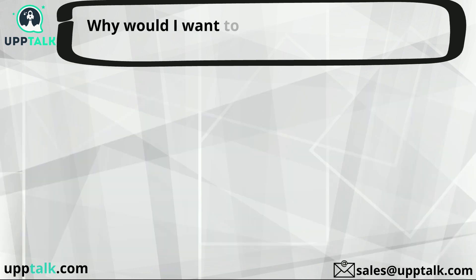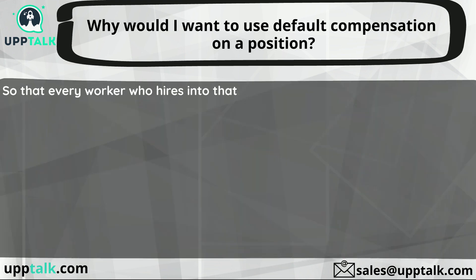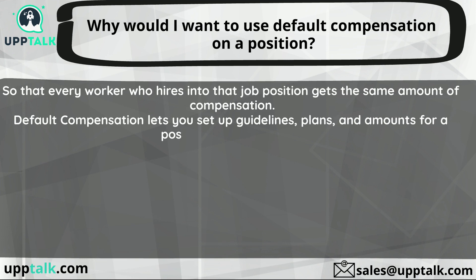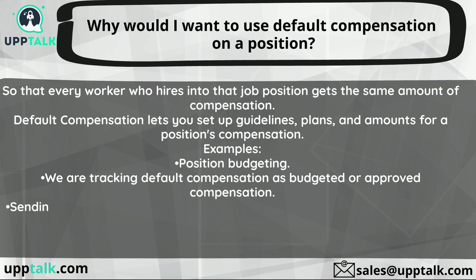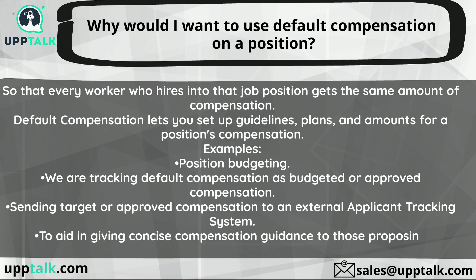Why would I want to use default compensation on a position? So that every worker who hires into that job position gets the same amount of compensation. Default compensation lets you set up guidelines, plans, and amounts for a position's compensation. Examples include: position budgeting, tracking default compensation as budgeted or approved compensation, sending target or approved compensation to an external applicant tracking system, and aiding in giving concise compensation guidance to those proposing compensation.